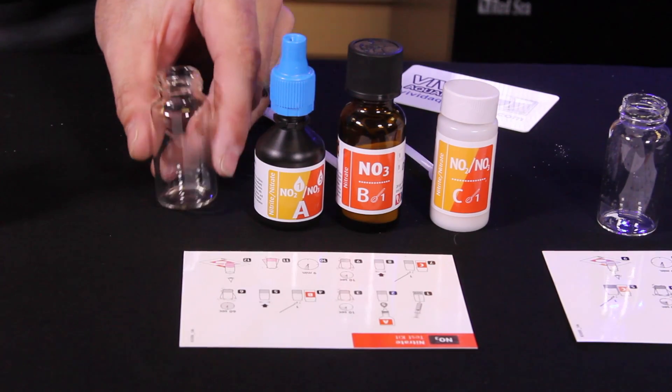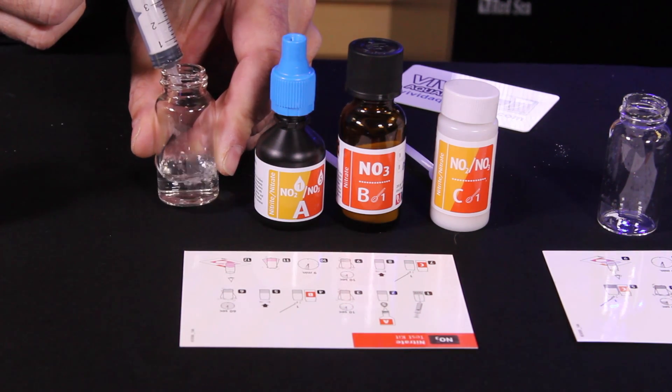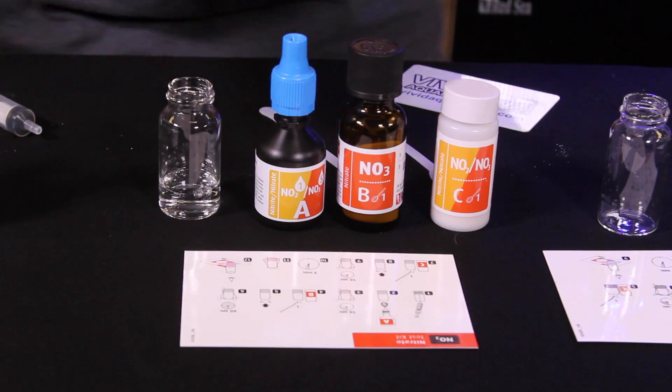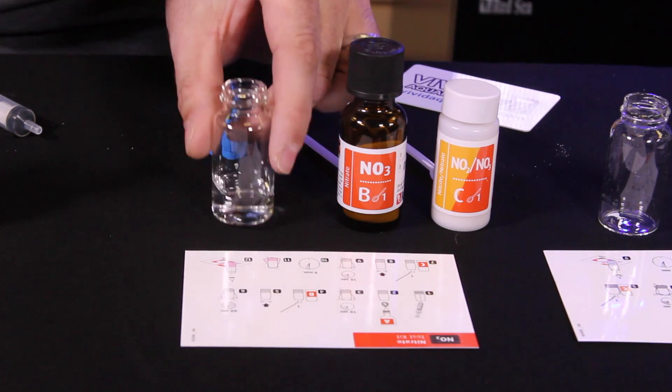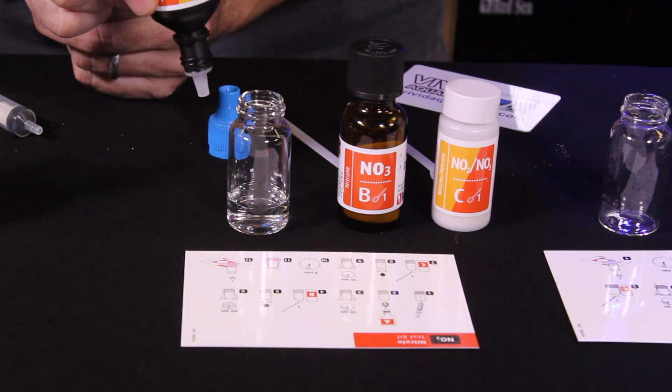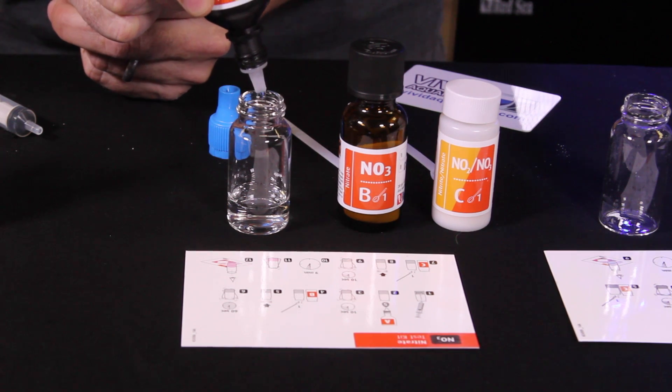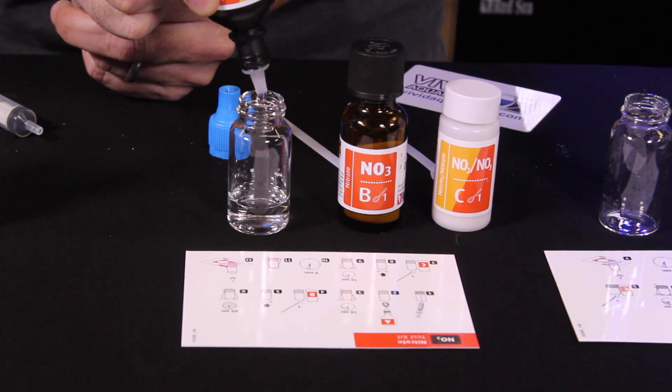Now we're going to go ahead and do our nitrate test. Again, for this test we need five milliliters of sample water into our test vial. The first step is to add five drops of reagent A. Again, we're going to turn that upside down next to the bottle. Make sure we don't get in any partial drops and do five even drops. One, two, three, four, five.